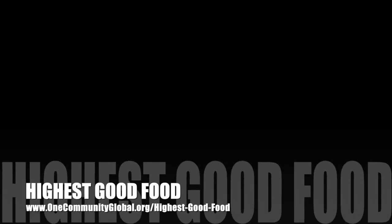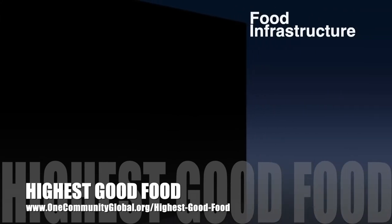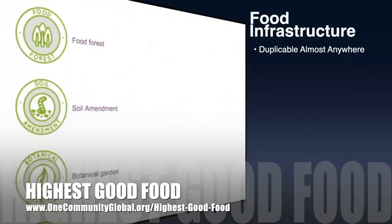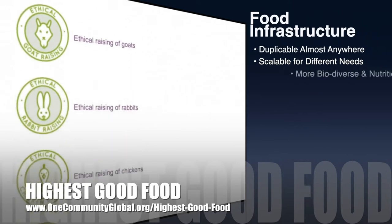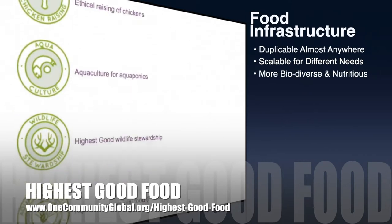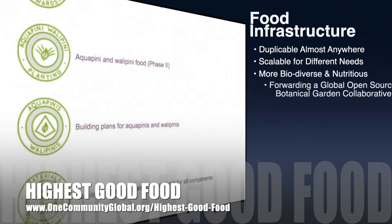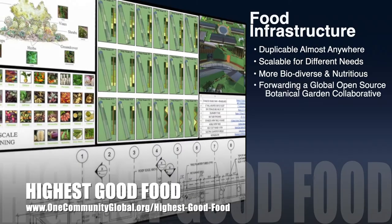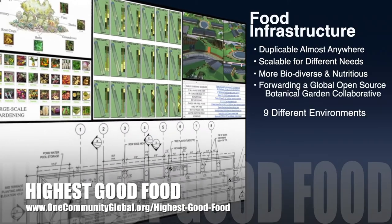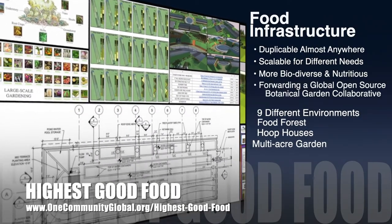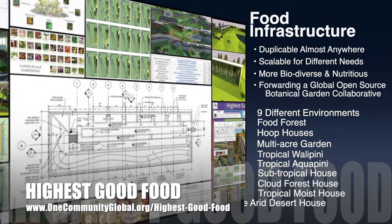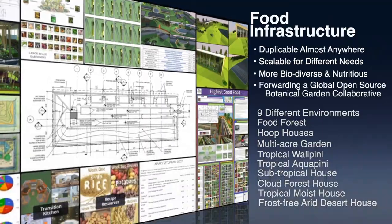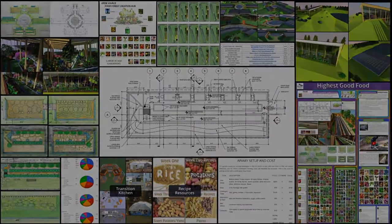One Community's approach to highest good food is duplicable almost anywhere, scalable for different needs, more biodiverse and nutritious, part of forwarding a global open-source botanical garden collaborative, and includes nine different free, shared, and duplicable growing environments.